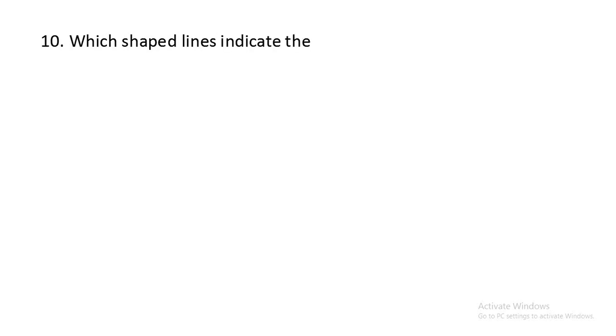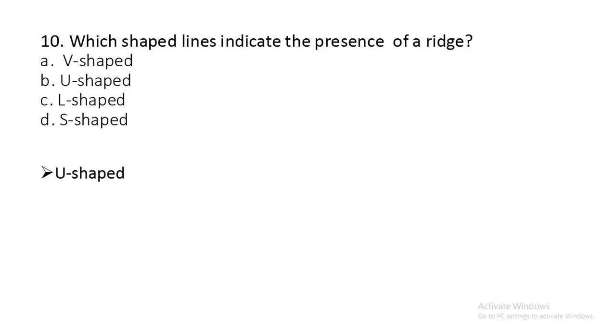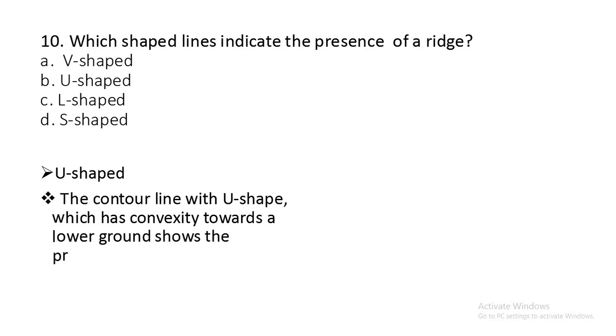Question number ten: Which shaped lines indicate the presence of a ridge? V shaped, U shaped, L shaped, or S shaped? U shaped. U shaped lines indicate the presence of a ridge. The contour line with U shape which has convexity towards lower ground shows the presence of a ridge.